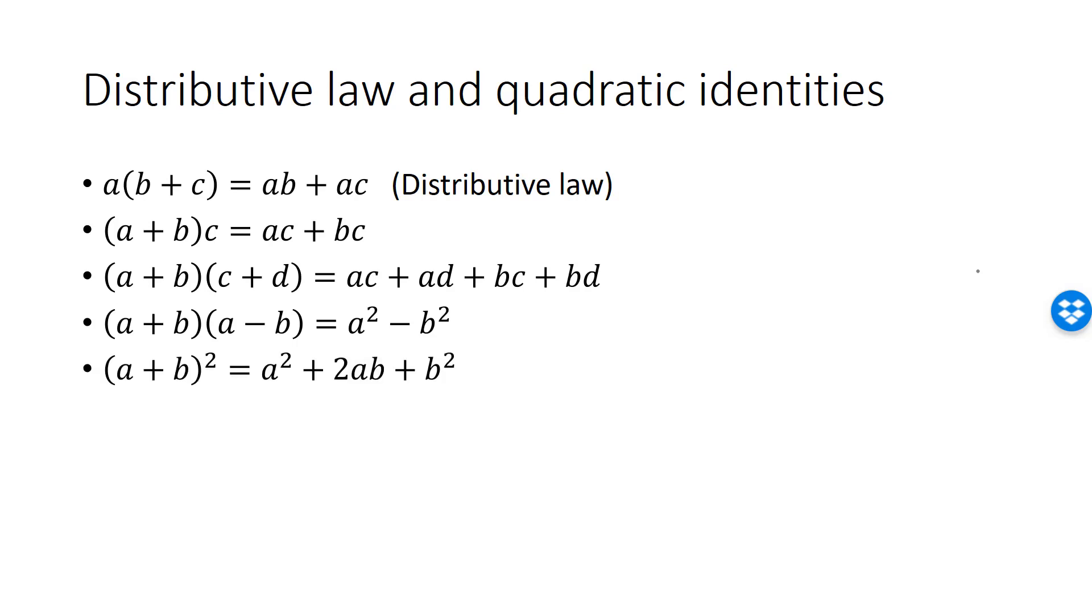In the next identity, I have plus in both, A plus B times A plus B, which we can write as A plus B squared. The result is A squared plus 2 times A times B plus B squared.